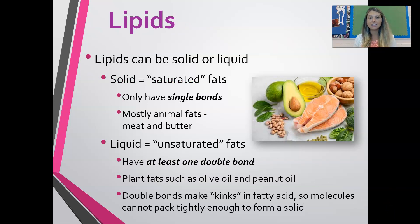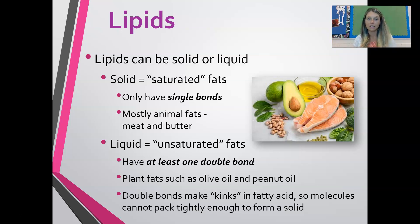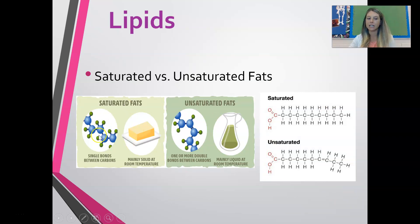You've probably heard of saturated fats and unsaturated fats. Saturated fats are typically solid and are saturated with only single bonds — this is the kind found in animal fats like meat and butter, and they really aren't healthy. Unsaturated fats tend to be healthy fats; they are called unsaturated because they have at least one double bond. These are plant fats like olive oil and peanut oil. Those double bonds make kinks in the fatty acid chain, making it hard for molecules to pack tightly together to form a solid.